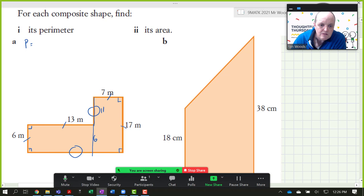Likewise with this one, we know that this distance must be the sum of the 13 and the 7, so this distance must be 20.